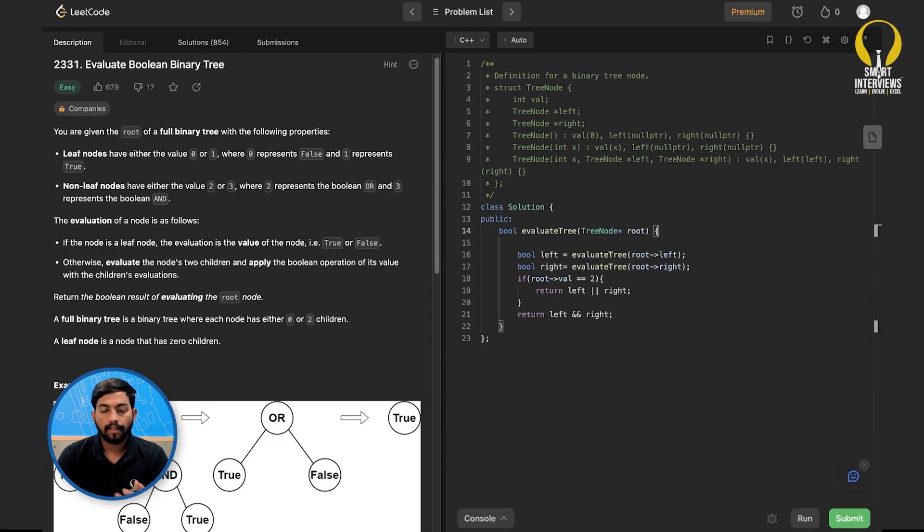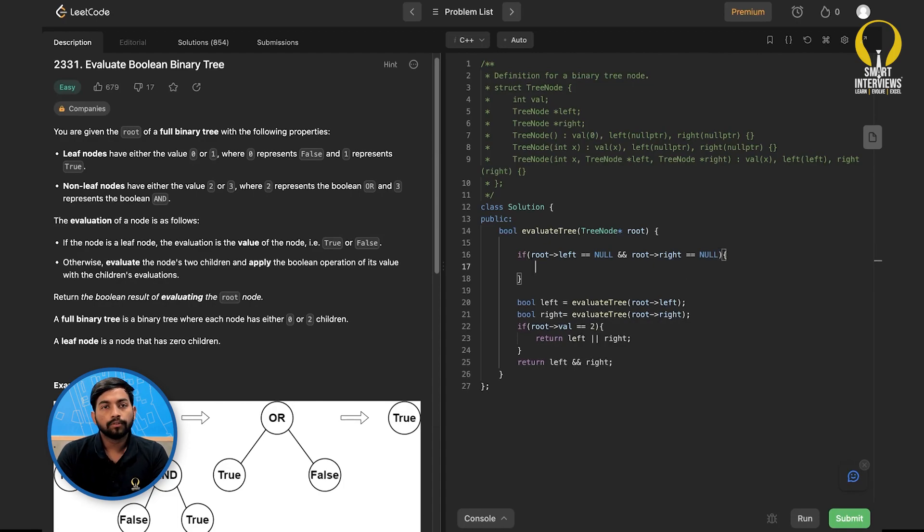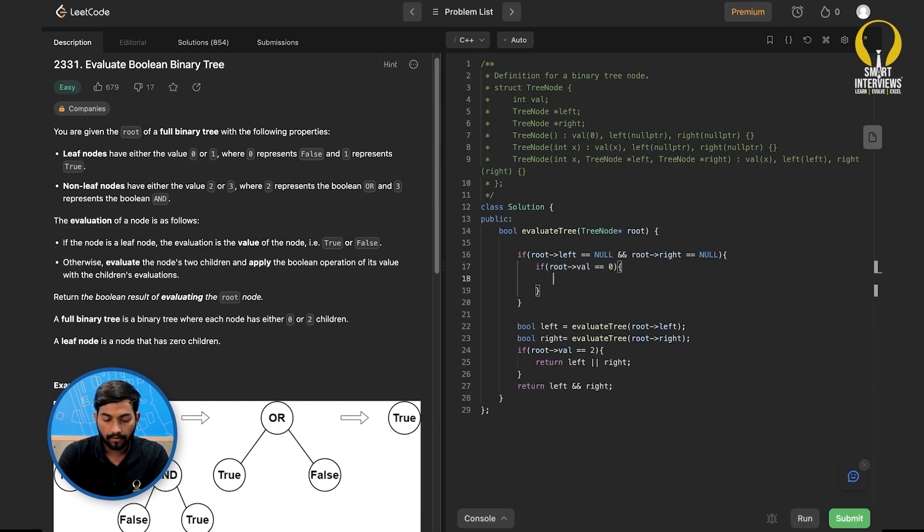Is this it? No, right. We have to check if the current node is a leaf node. So how do we check? Leaf node has no children that is left child and right child will be null. So if root of left is equal to null and root of right is equal to null. What do we do? We will either have 0 or 1 at the leaf node. So if root of value is equal to 0, we return false. Otherwise, we return true. That's it.